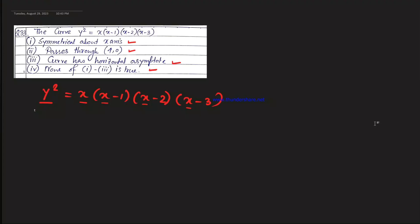Consider the curve y² = x(x-1)(x-3). It is symmetrical about the x-axis, passes through (4, 0), and the curve has a horizontal asymptote — or none of options 1 to 3 is true.